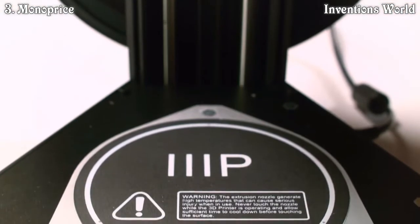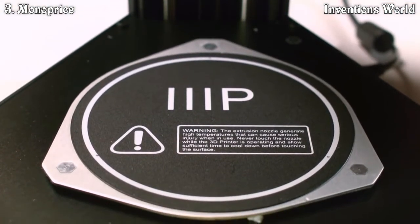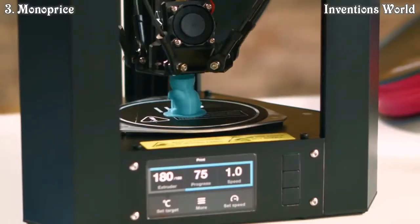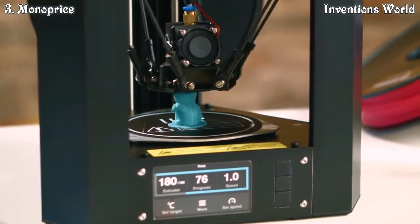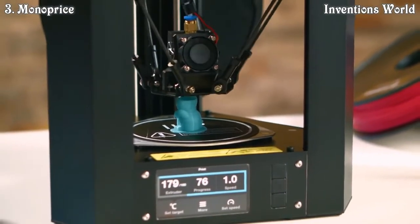The removable heated build plate improves print quality and reliability with different filaments. And lastly, the all-metal aluminum construction increases durability and reliability while still maintaining its lightness.